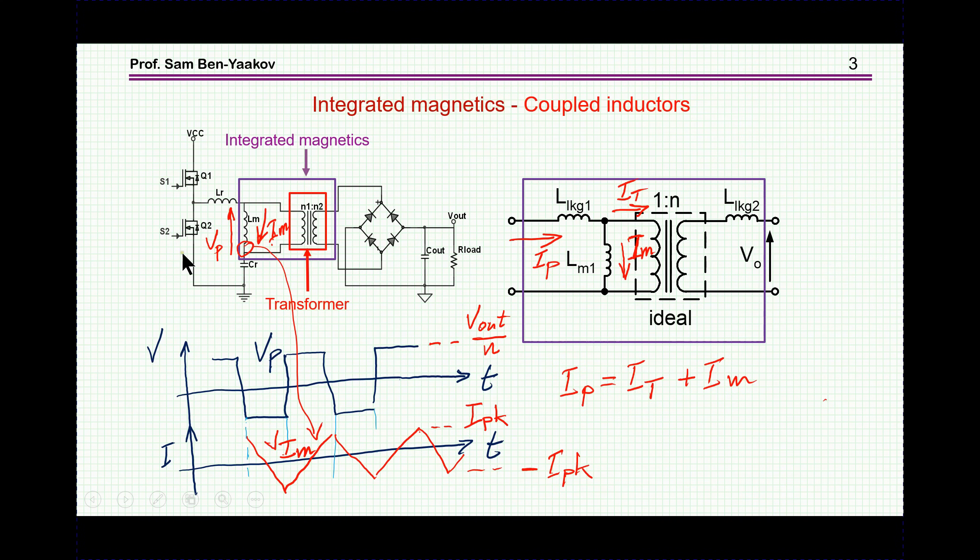We can build this converter by having a discrete transformer, inductor, and two inductors in fact. Or we can combine this inductor with this structure in the so-called integrated magnetics, so that the input inductance to this element will be the required resonant inductor L_M. In this case, this is going to be a coupled inductor.